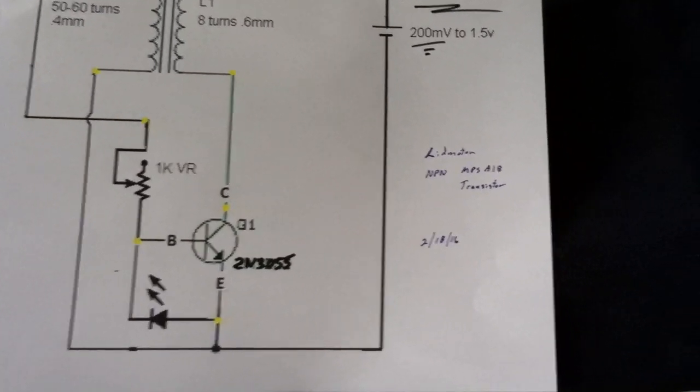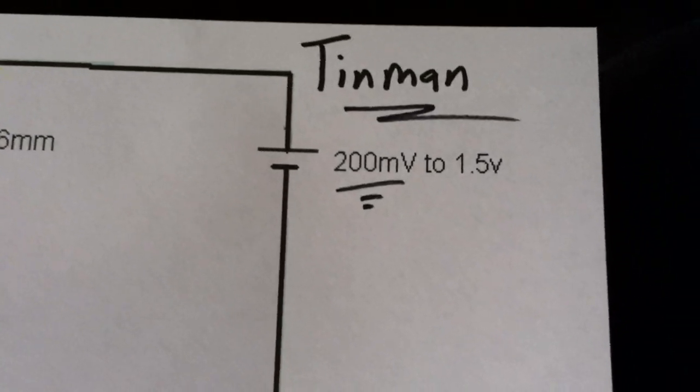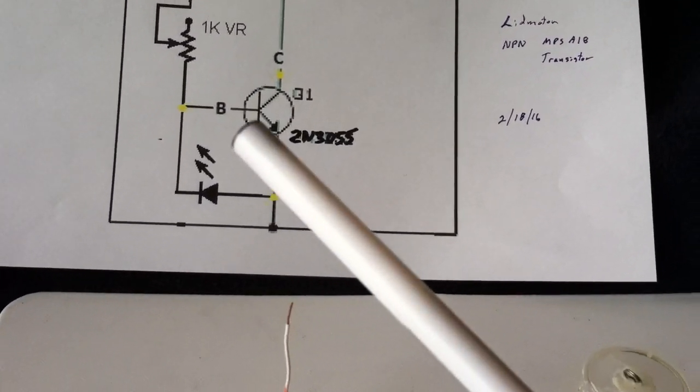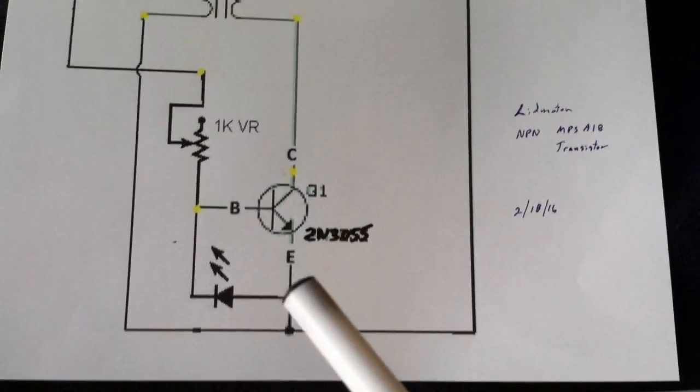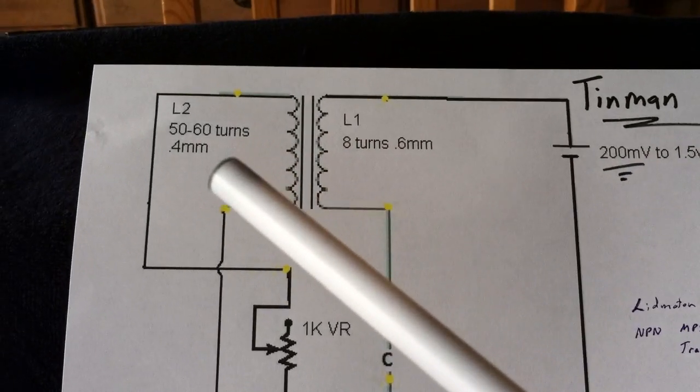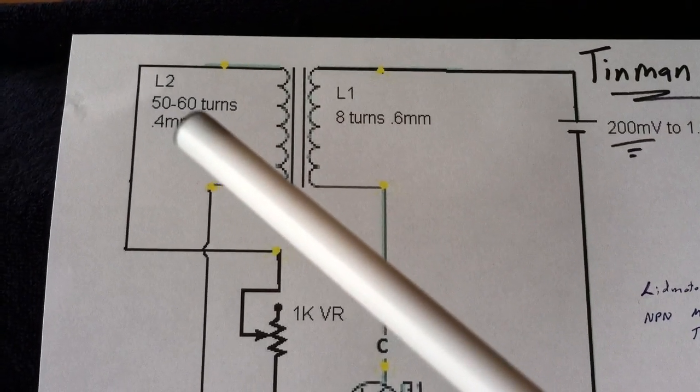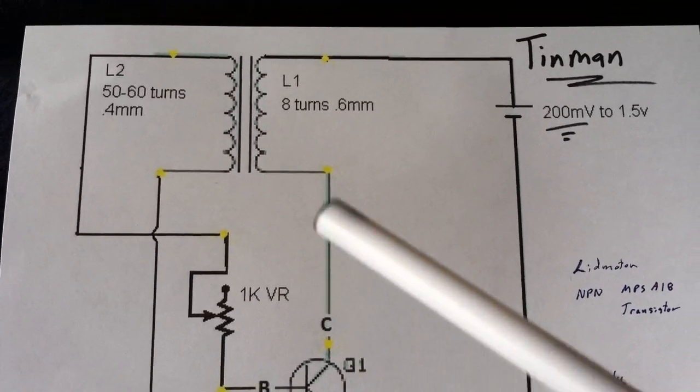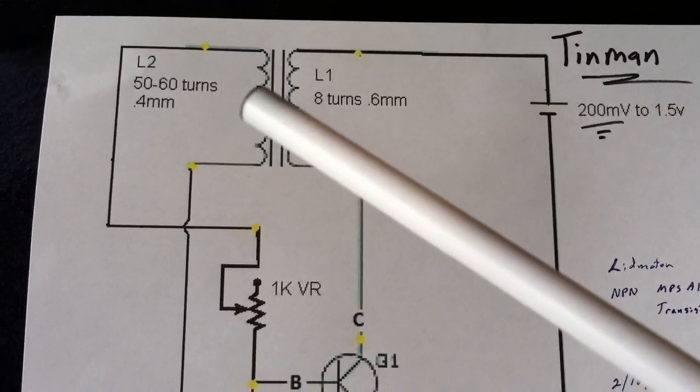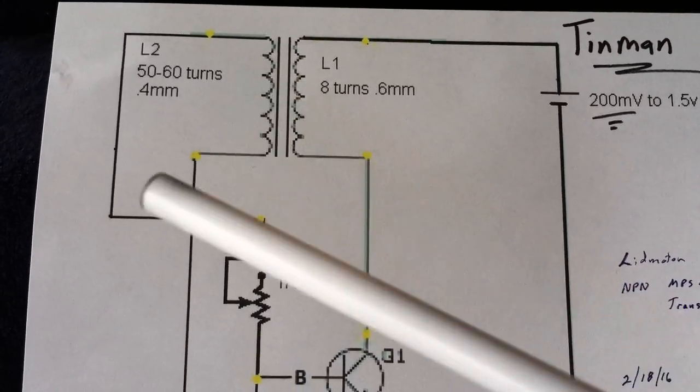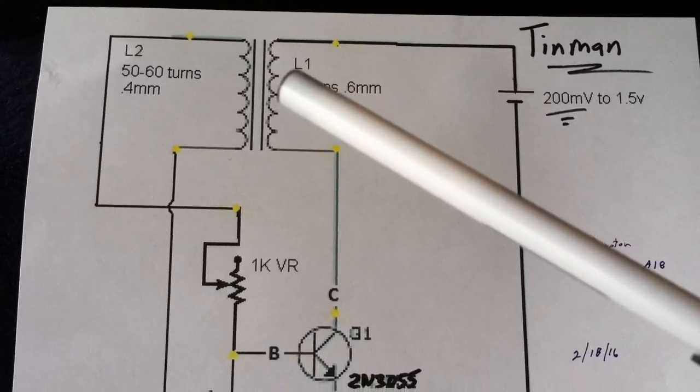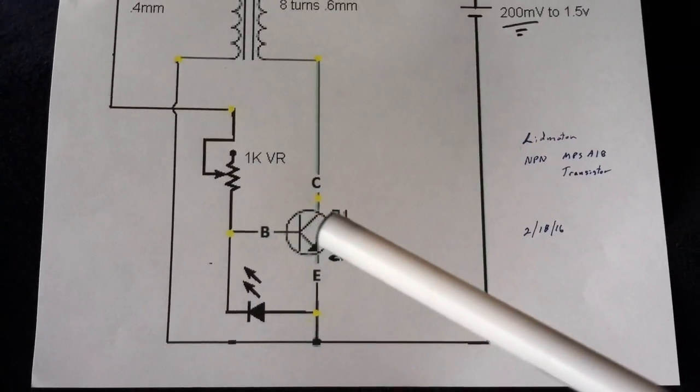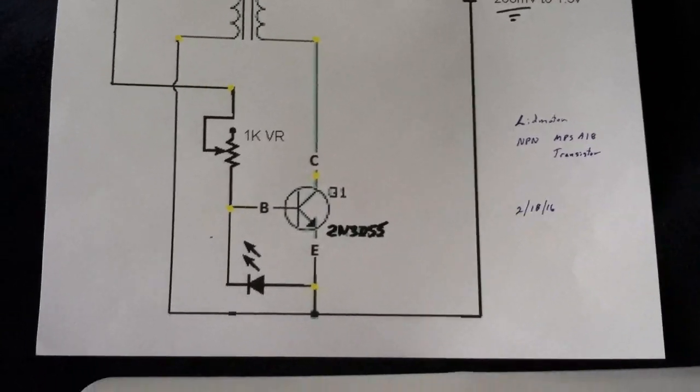But when you get down to these low, low voltages, like he was showing, that is lower than what the transistor can switch at. And so the way you do it is you mismatch the windings, and that's what he did here. He has eight windings on the main coil, and then the trigger coil has smaller or more turns on it, so that when this goes into oscillation, you generate enough voltage to trigger the transistor, which is usually about half a volt.